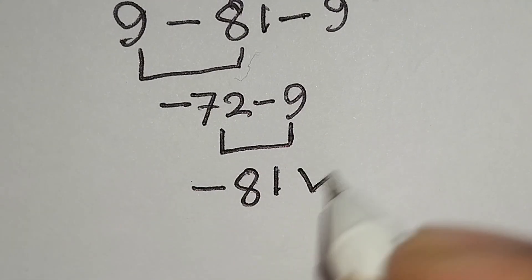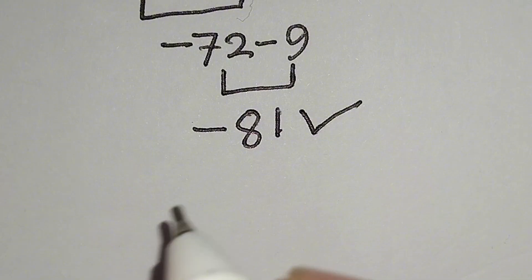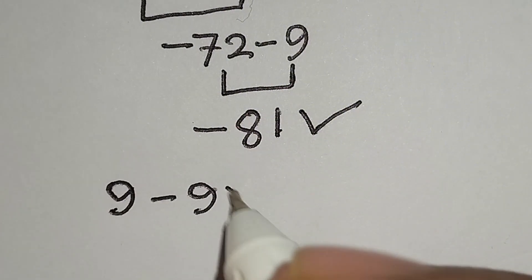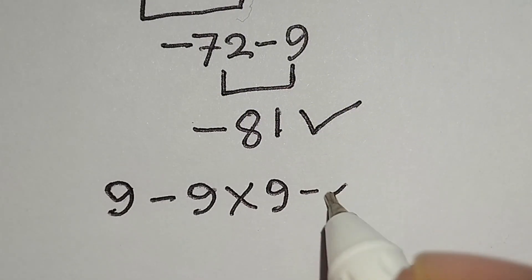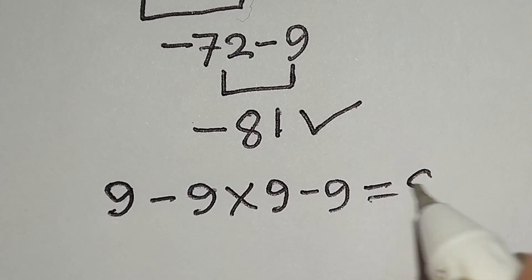And this is the correct answer. Therefore 9 minus 9 multiply 9 minus 9 is equal to minus 81.